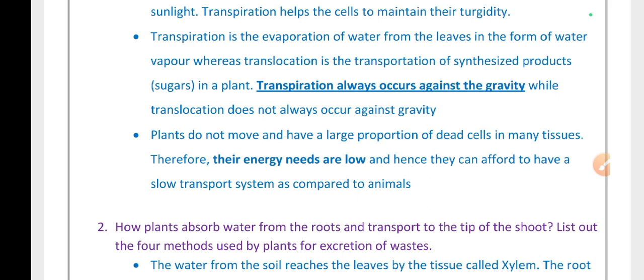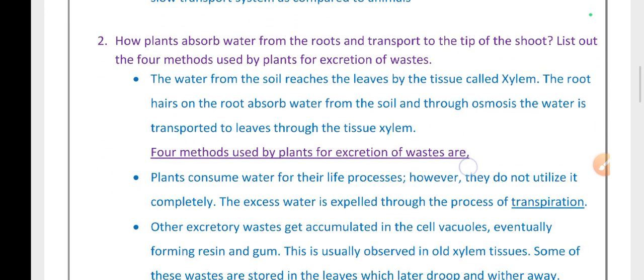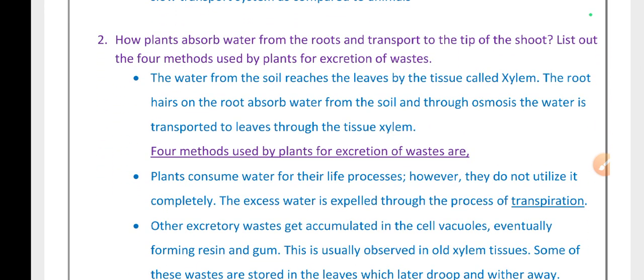Hence, they can afford to have a slow transport system as compared to animals. The next question: How do plants absorb water from the roots and transport it to the tip of the shoot? List out the four methods used by plants for excretion of wastes.